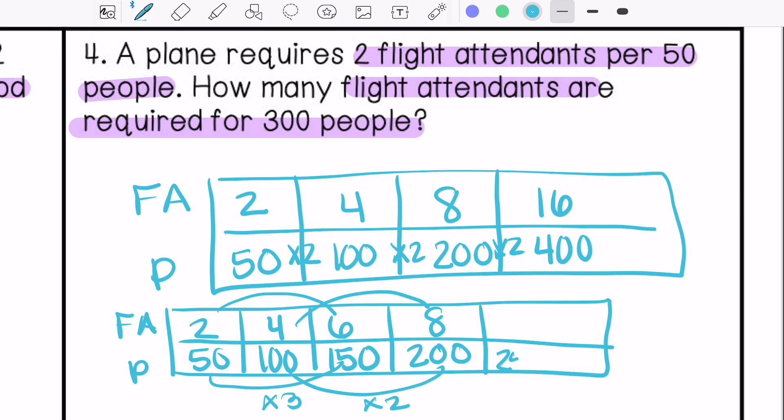Then we have 250, that would be times five here. So two times five is 10. And then 300 would be times three here, so four times three is 12. So 12 flight attendants.